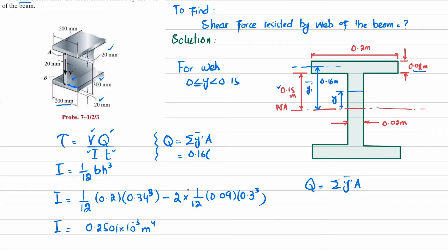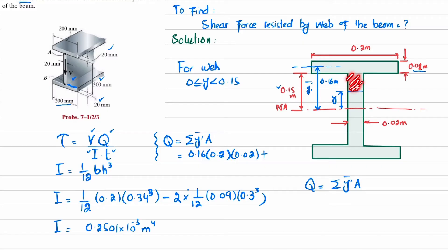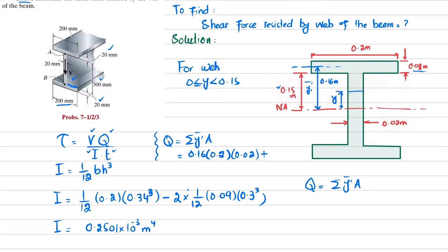So the first term is 0.16 × (0.2 × 0.02). For the second member — the web portion above Y — its width is 0.02 m and its height is (0.15 − Y). The area for the second member is 0.02 × (0.15 − Y), and its centroid ȳ₂ = Y + (0.15 − Y)/2.